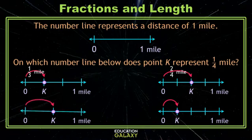In our next number line, the space between 0 and 1 mile is split into two equal parts. Our point K is on the first tick mark, which means it represents 1 half mile.